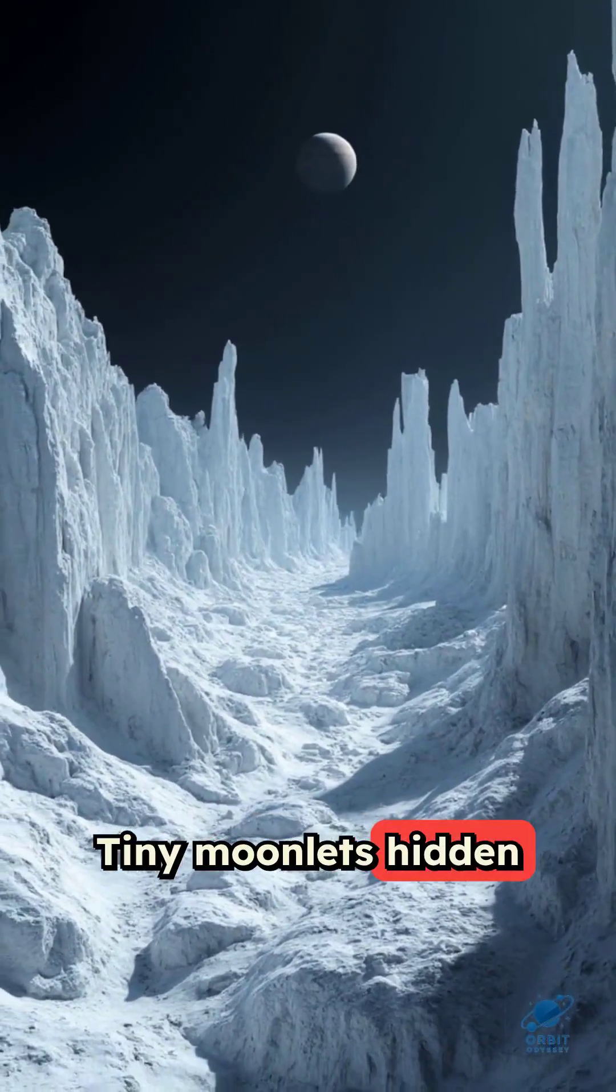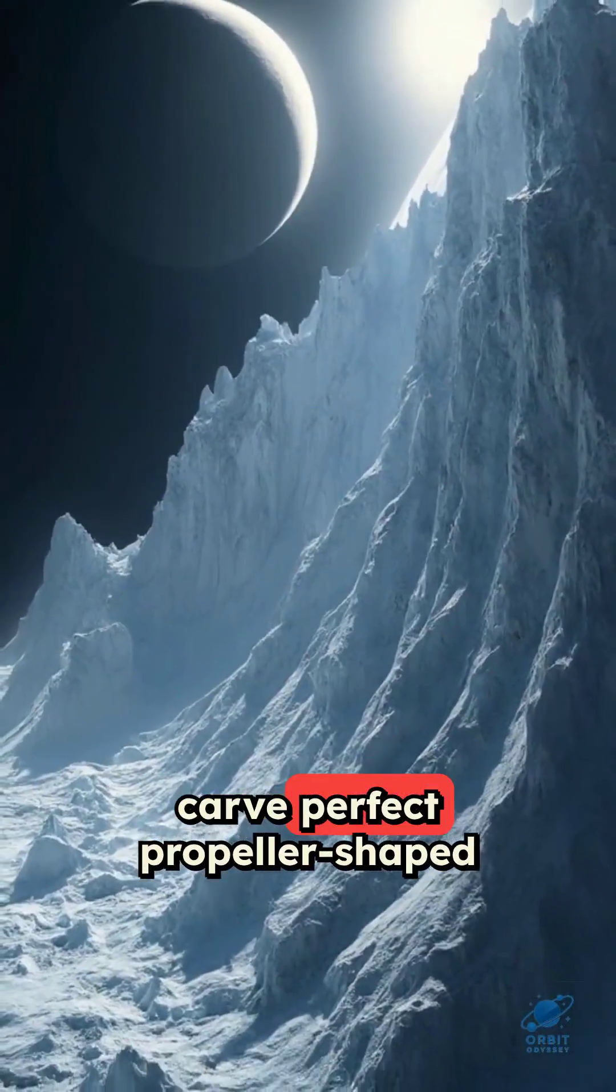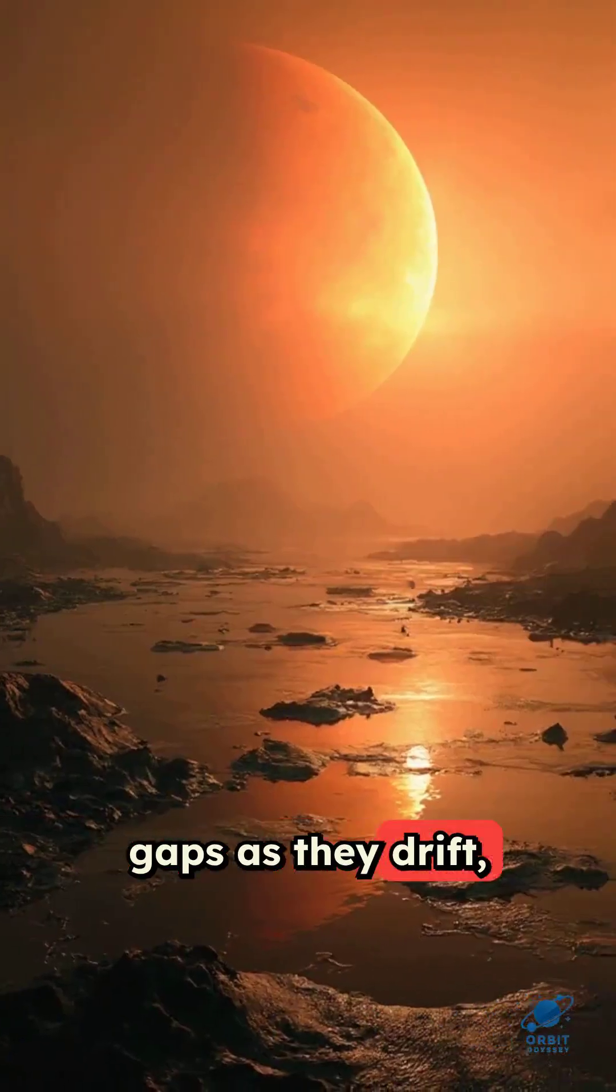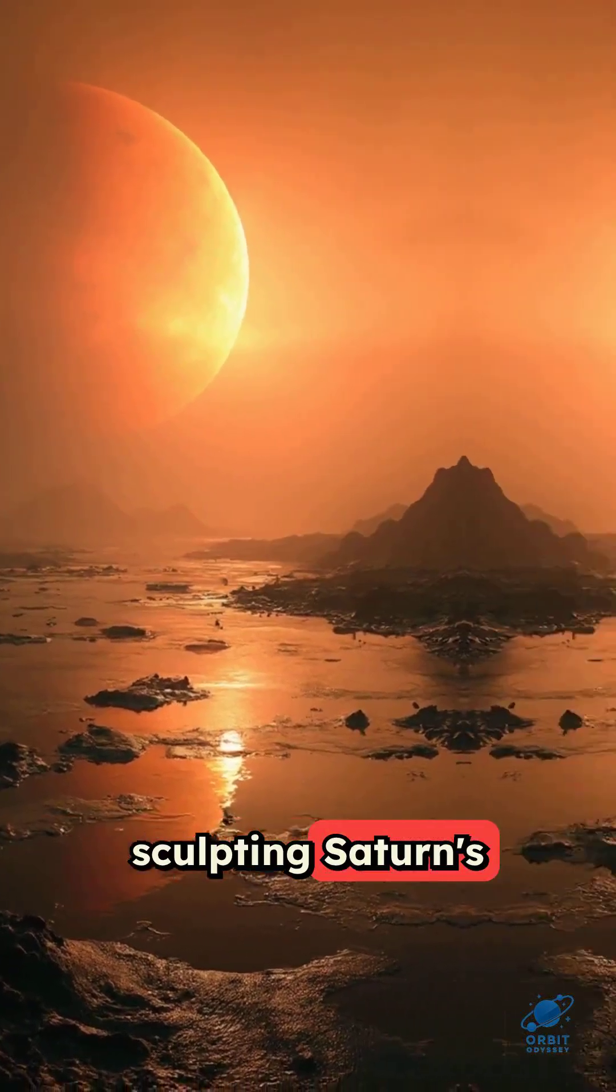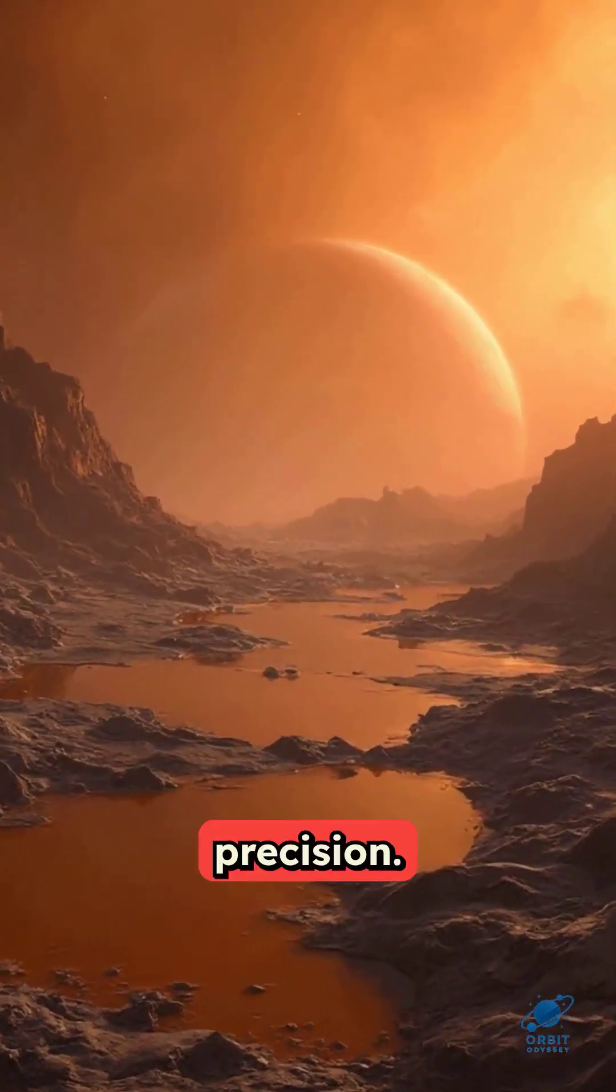Tiny moonlets hidden within the rings carve perfect propeller-shaped gaps as they drift, invisible gardeners sculpting Saturn's icy halo with ghostly precision.